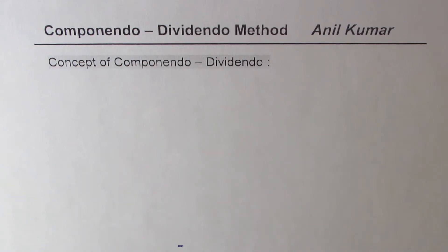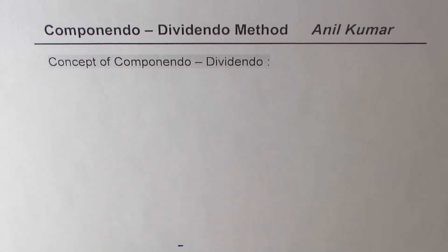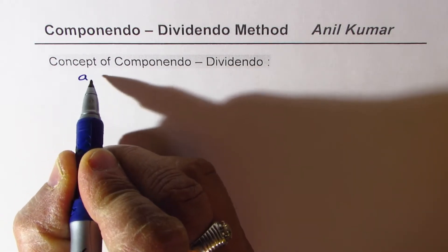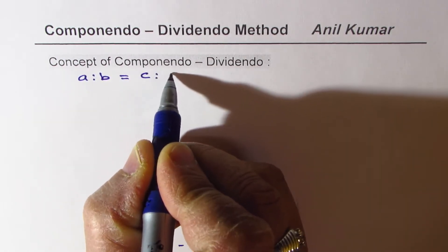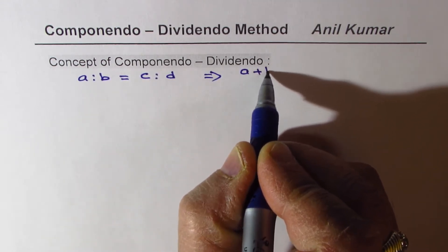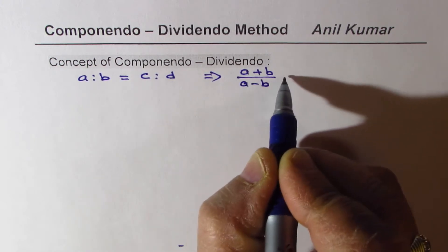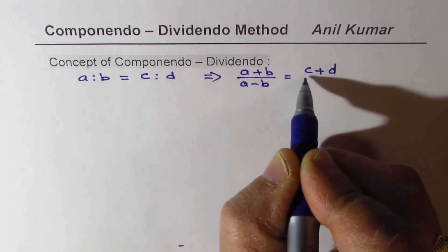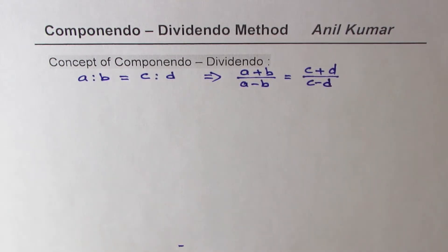I'm Anil Kumar. Welcome to my series on the Componendo Dividendo method. This is a remarkable technique which will help you solve most of the challenging questions on ratios and proportions. If A is to B equals to C is to D, then we could always write this as A plus B over A minus B equals to C plus D over C minus D. That is the method which we are going to prove and apply in some questions.